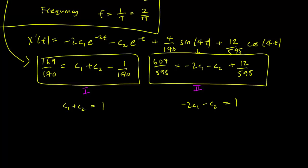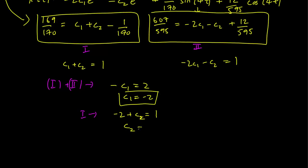The most straightforward thing to do is to add the two equations. So 1 plus 2 gets us that minus c1 equals 2 or c1 equals minus 2, which is our first solution. And plugging that in to the first equation gets us that minus 2 plus c2 equals 1 or c2 equals 3. That is our solution for c1 and c2.